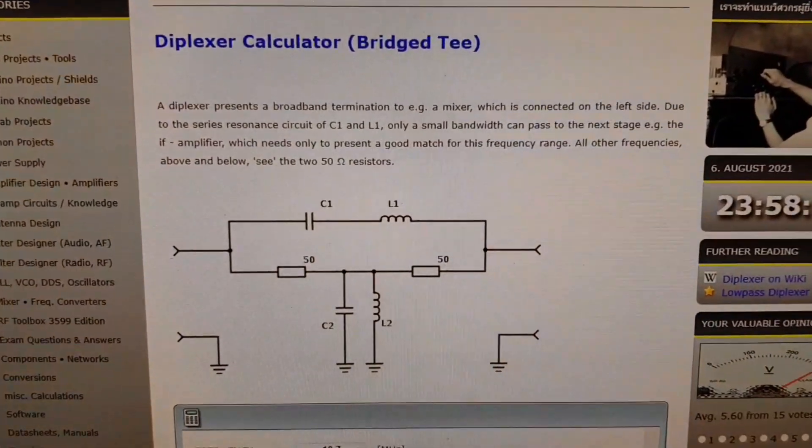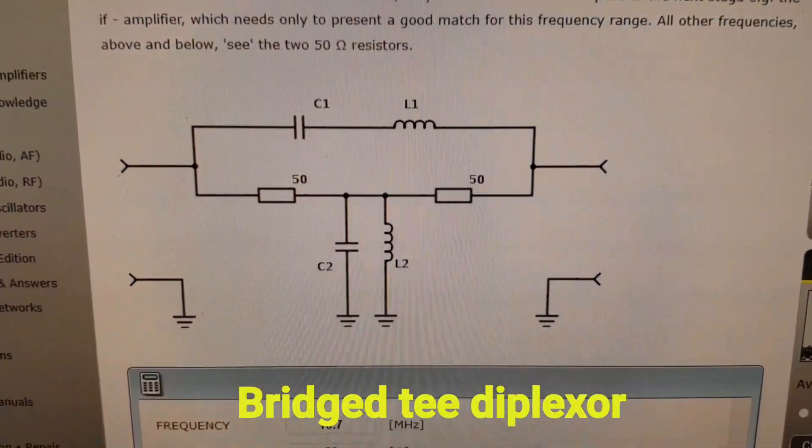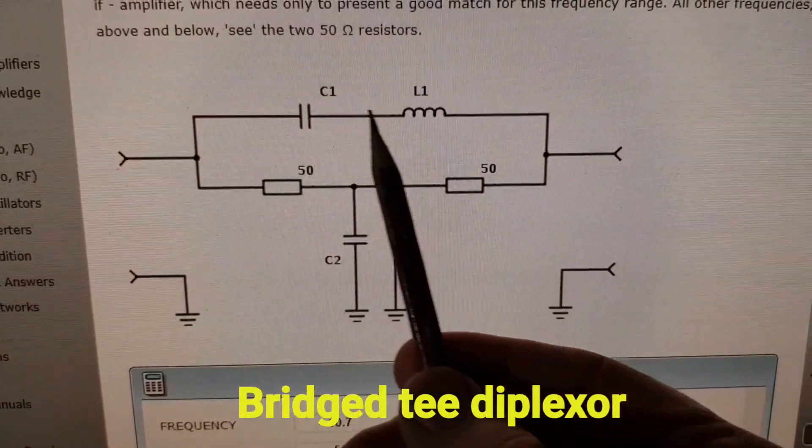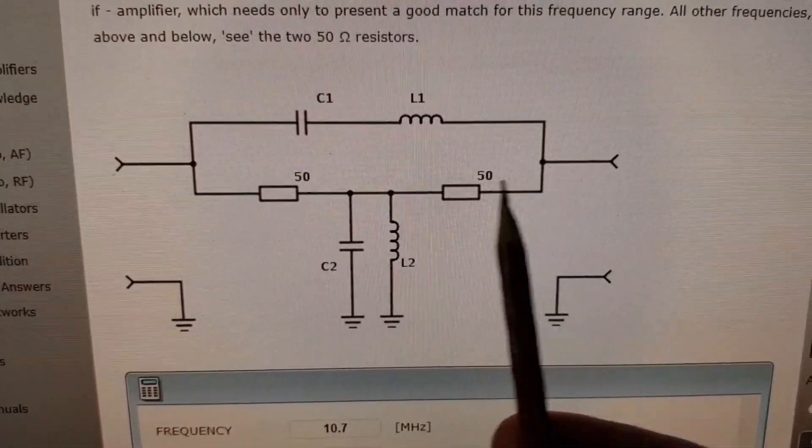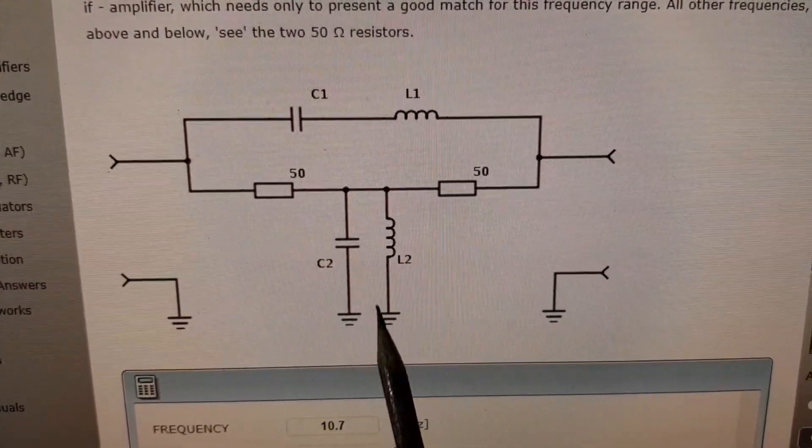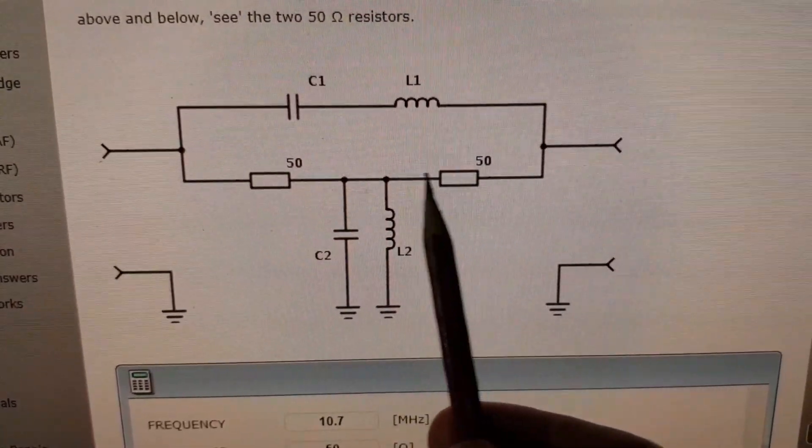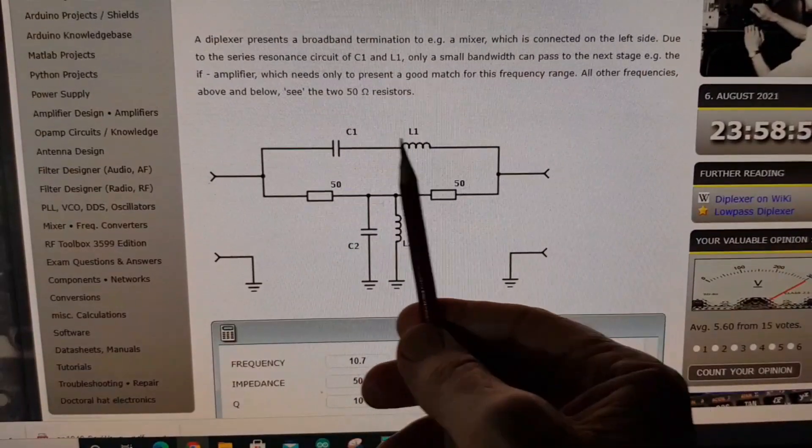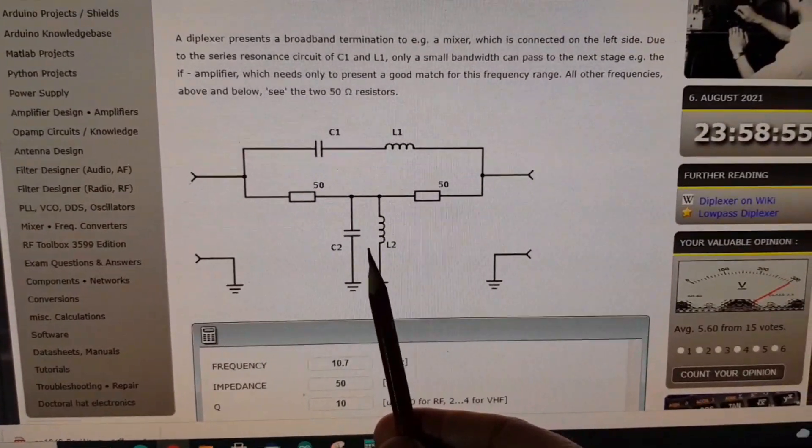A popular form of diplexer is called the bridged-T diplexer and it looks like this. It's simply a series tuned circuit and a parallel tuned circuit to ground, with two 50 ohm resistors to either port.